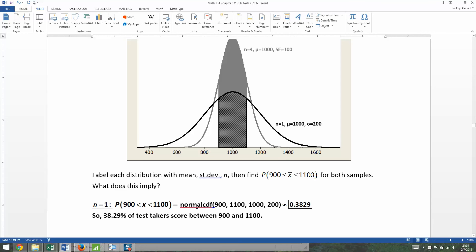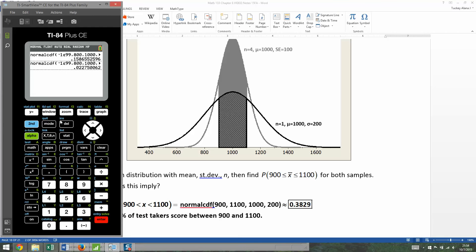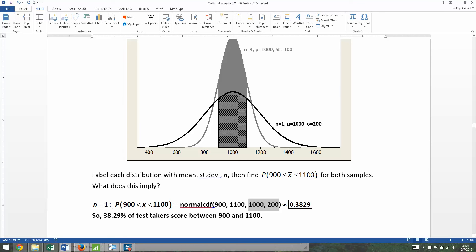So I typed it up. Normal CDF, 900 to 1100, 1000 is our mean, 200 is our sigma for this black curve here. So I'm going to go back to distributions, hit number two, normal CDF. I want to type 900, enter, 1100, enter, 1000, and 200. I'll go to paste and press enter. And that means that 38.29% of individual test takers score between 900 and 1100. So around 38% of the students that take this test score in that range from 900 to 1100.